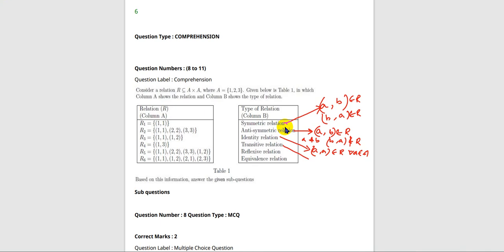Transitive relation: if (A, B) belongs to R and (B, C) also belongs to R, then (A, C) should also belong to R. Then it is a transitive relation.